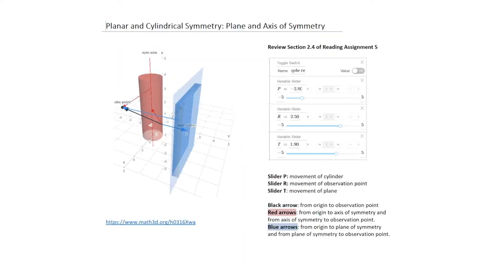Let's first discuss the notion of what we mean by symmetry. The types of problems we're dealing with here are limited, so we'll look at planar symmetry and cylindrical symmetry. When we deal with planar symmetry, we're talking about a plane of symmetry, and when dealing with cylindrical symmetry, we're dealing with an axis of symmetry.